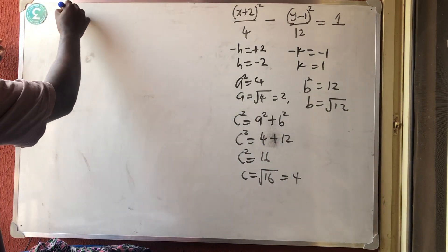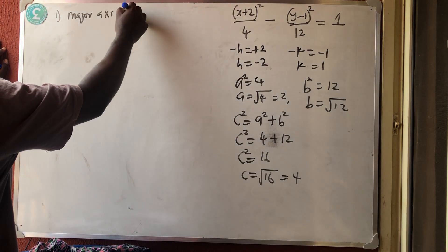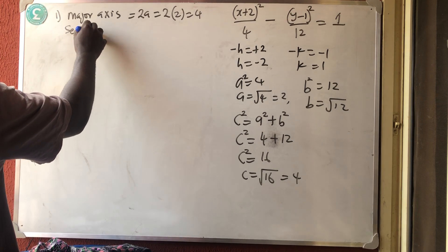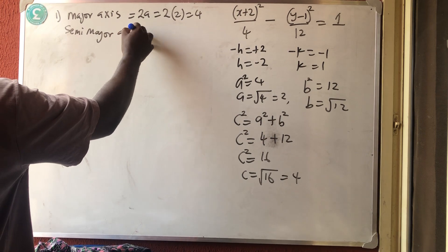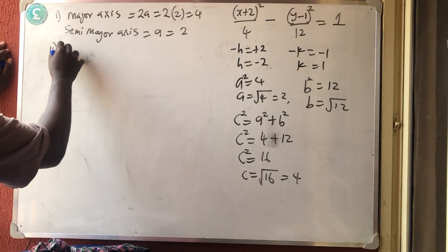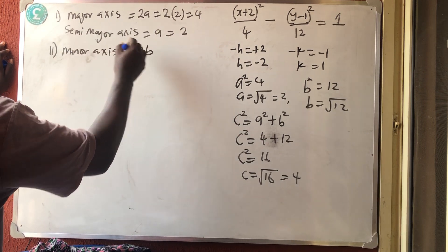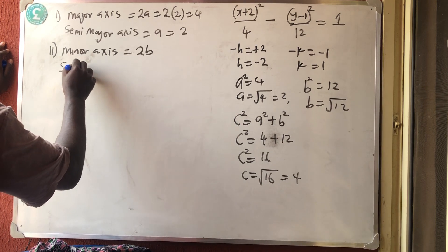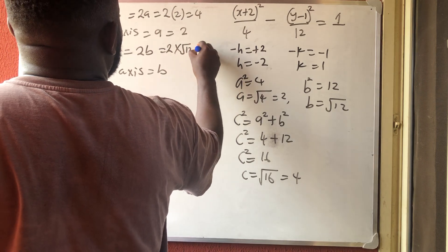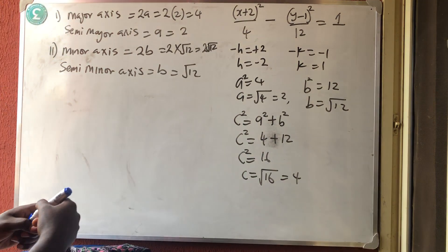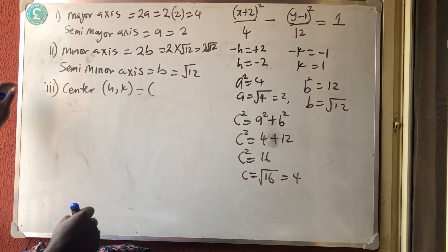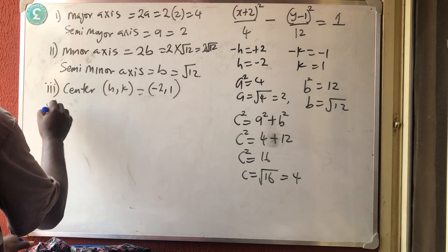Now we can find the required quantities. The major axis = 2a = 2 × 2 = 4. The semi-major axis = a = 2. The minor axis = 2b = 2√12. The semi-minor axis = b = √12. The center is (h, k) = (−2, 1).